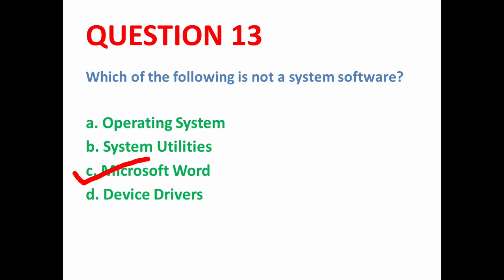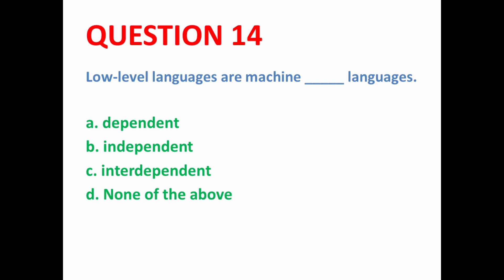Next MCQ: Low level languages are machine dash languages. Machine language and assembly language are known as low level languages. Their key feature is that they are machine dependent or platform dependent languages — meaning code written for one machine (like an IBM computer) will not run on another company's computer. So low level languages are machine dependent languages.